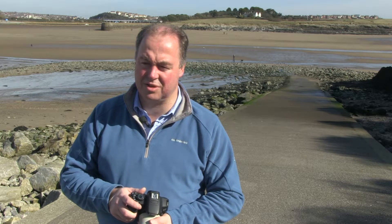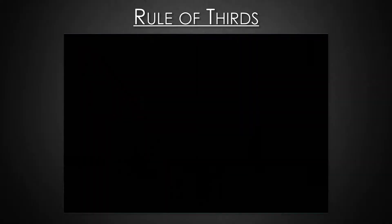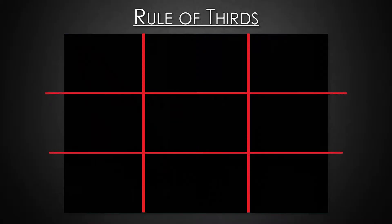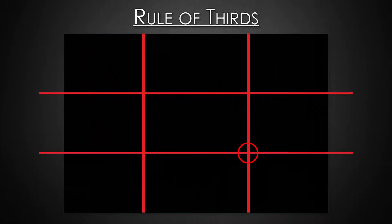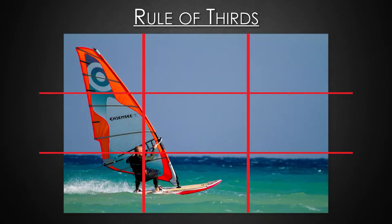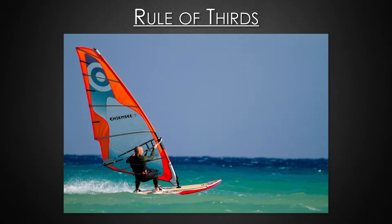One of the first ones we're going to look at is the rule of thirds. What this means is you take two lines vertically and two horizontally to divide your picture into nine equal sectors. If you place your primary subject at the intersection of one of those points, you can create a much stronger, more powerful picture than if you placed your main subject right in the middle.